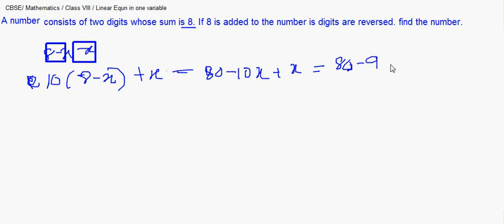It is not necessary to always place x at the units position. If x is at the tens place, then 8 minus x is in the ones place and you would multiply 10 by x instead. Now the problem says if 18 is added to the number 80 minus 9x, the digits are reversed.